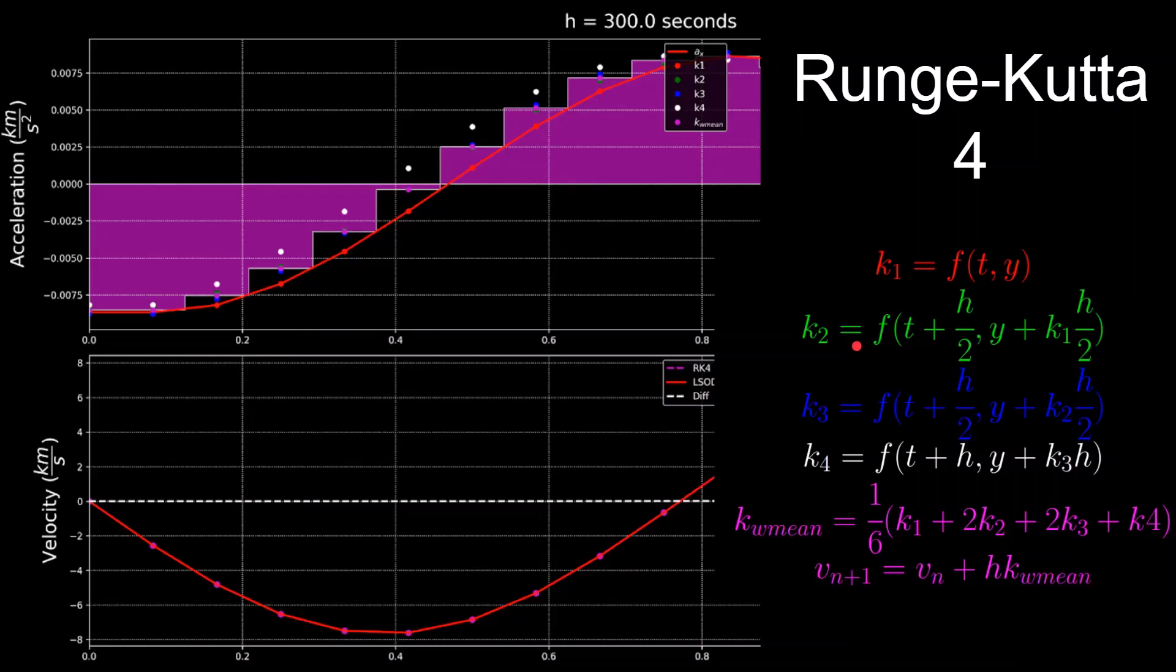Next is K2, which estimates the derivative halfway between now and the next time step, hence why H here is divided by 2, as well as the state being updated by what it would be half a step into the future. And these are all the green dots in the plot.